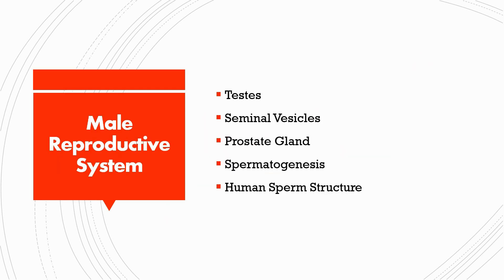In the male reproductive system, you will mention the testes, seminal vesicles, prostate gland, what is spermatogenesis, and lastly the structure of human sperm. All these have already been taught in our previous lectures on the reproductive system and endocrine system — you may visit those videos for more detailed information.